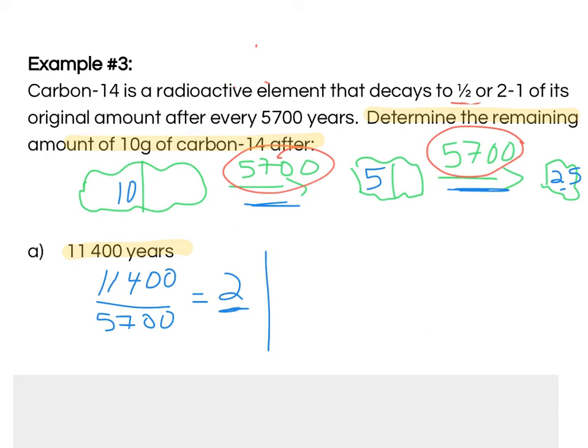However, what if these numbers were not so nice and what if it was like billions of years? Then, I couldn't just keep sort of going through this process. Well, I could, but it wouldn't be the most efficient way to go about it. So, I need to think about a more efficient way to do this.